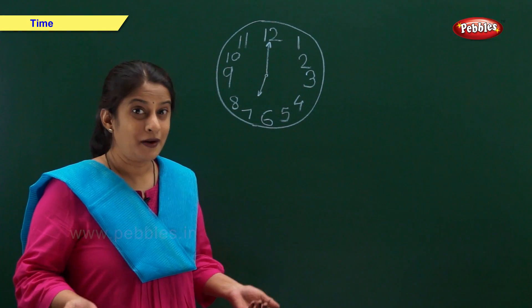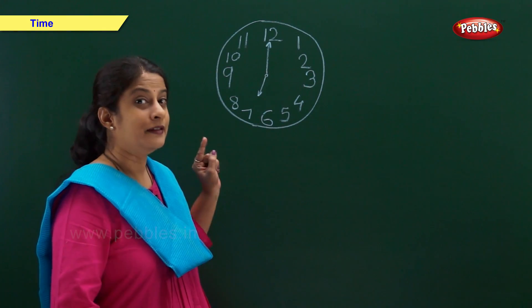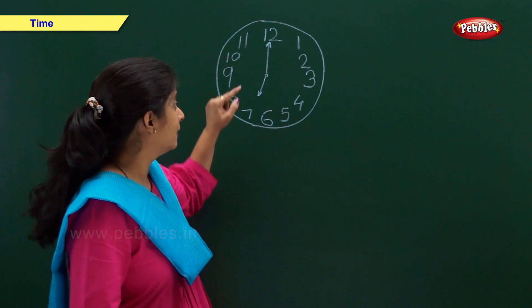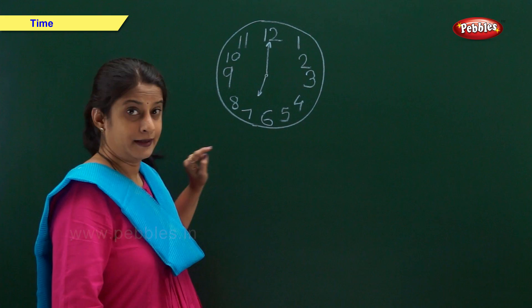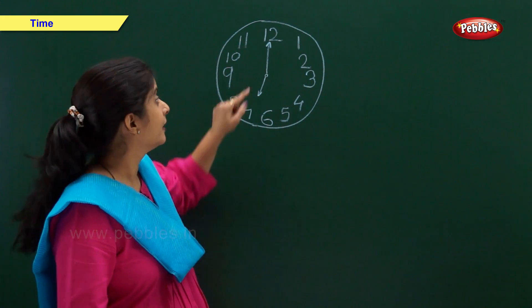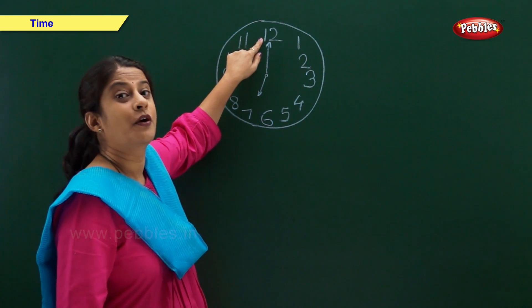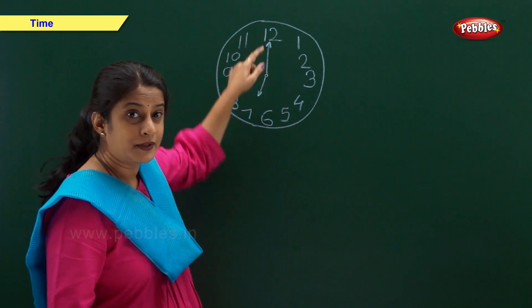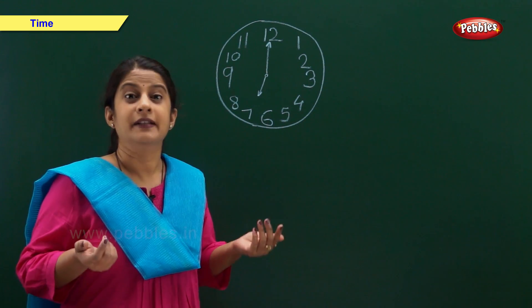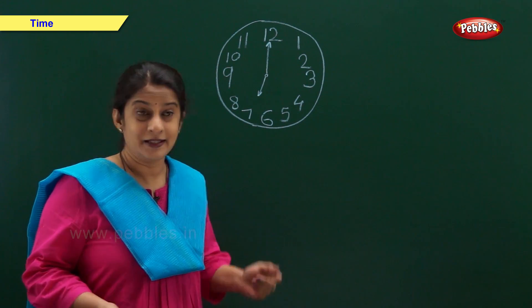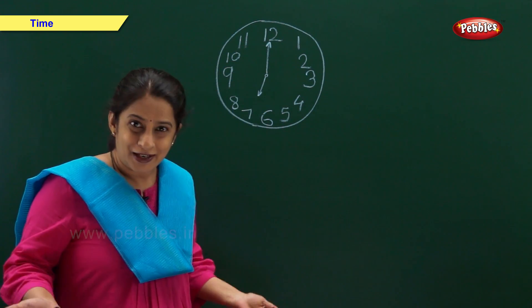The clock tells us the time. In this clock, the hour hand is on 7 and the minute hand is on 12. So we say the time is 7 o'clock.